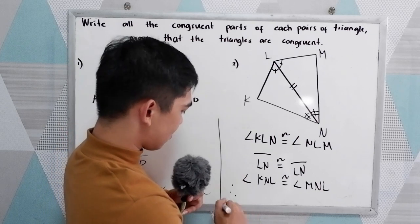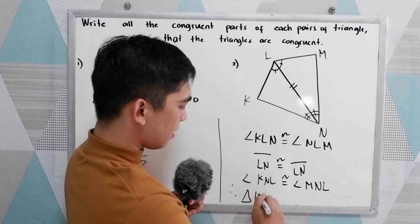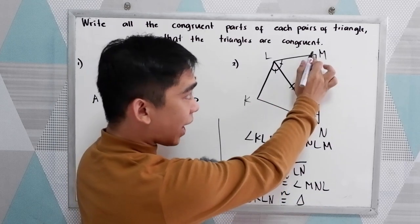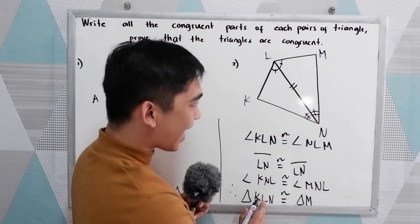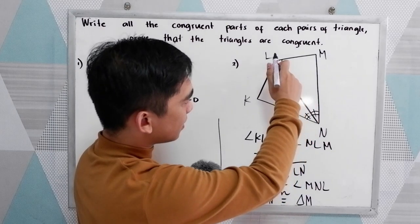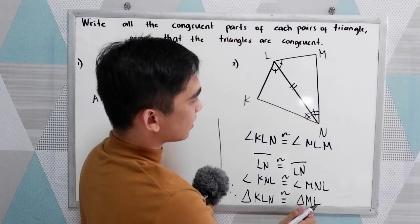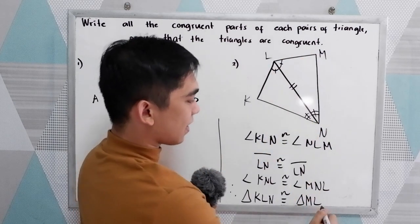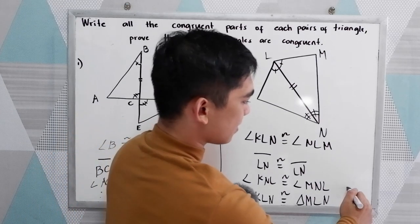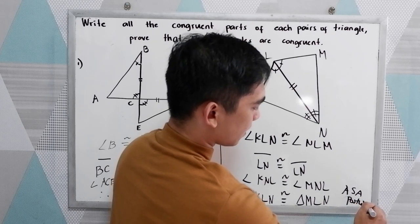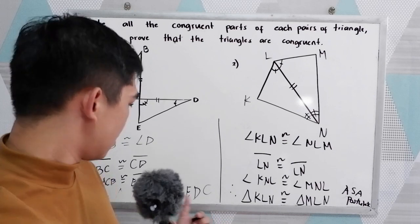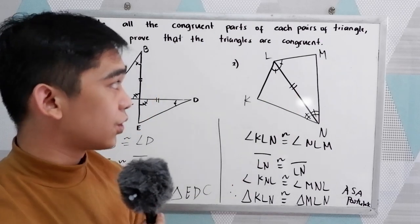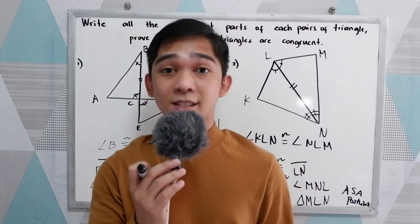We can now conclude that triangle KLN is congruent to triangle MLN by the angle-side-angle postulate. Be careful in writing your conclusion — always check that our vertices correspond to those of the other triangle. Thank you for watching Senior Pablo TV.